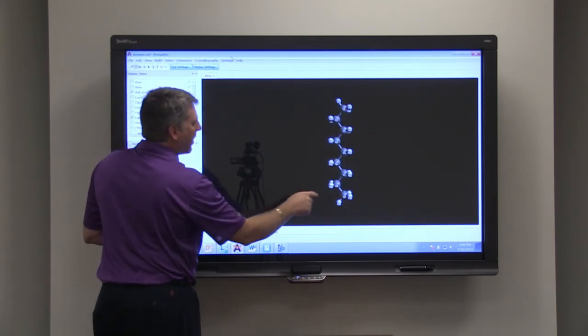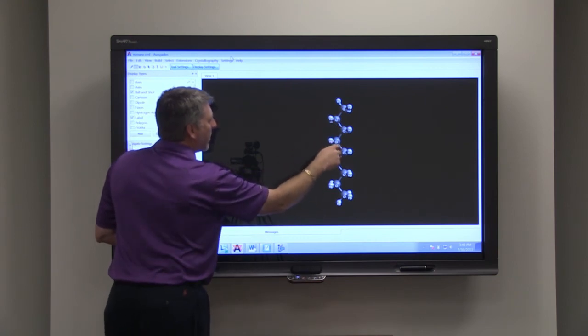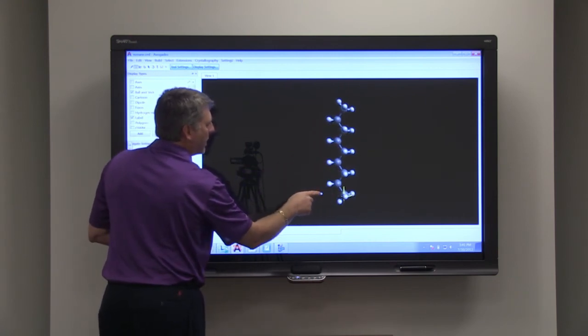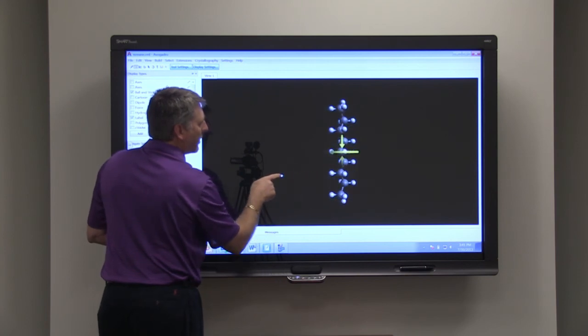Nonane will have nine carbons. One, two, three, four, five, six, seven, eight, nine. Again, we just have a long chain.